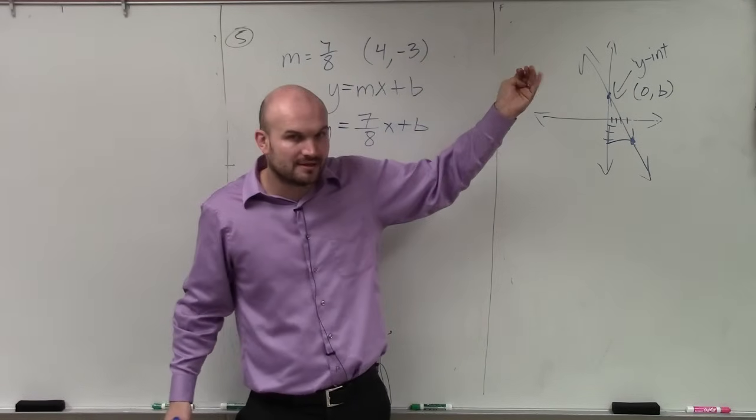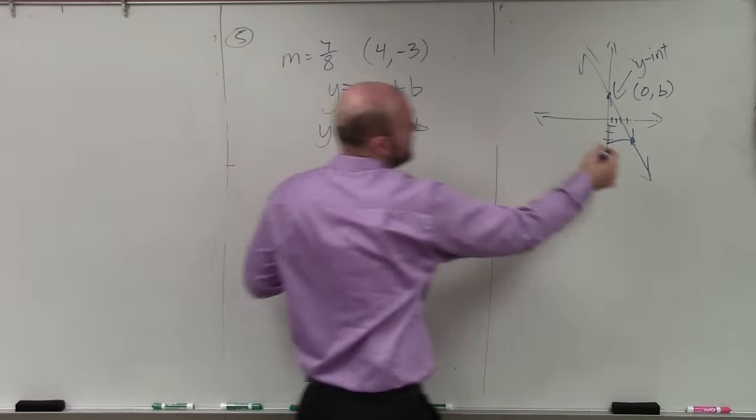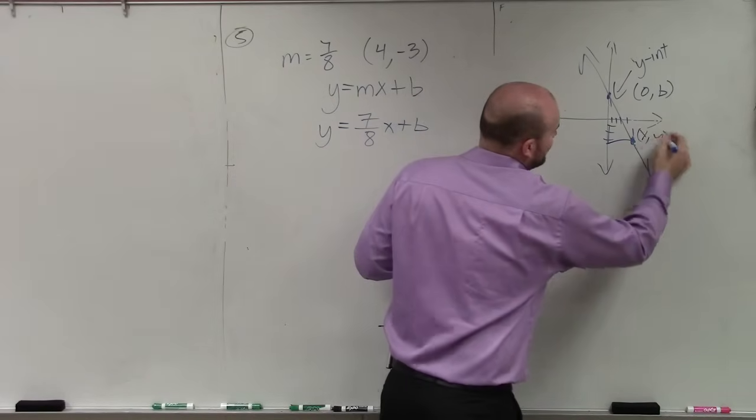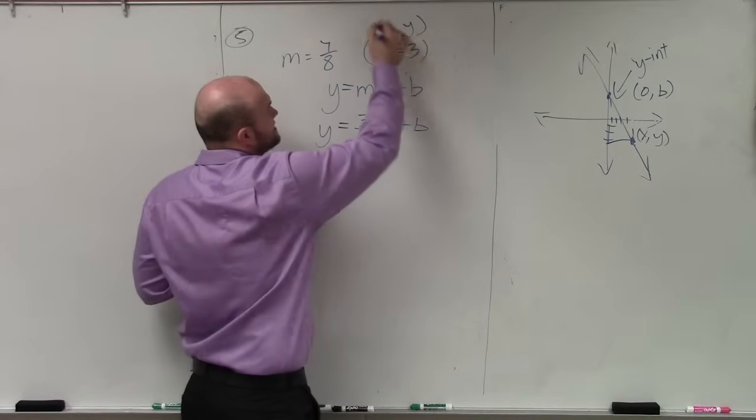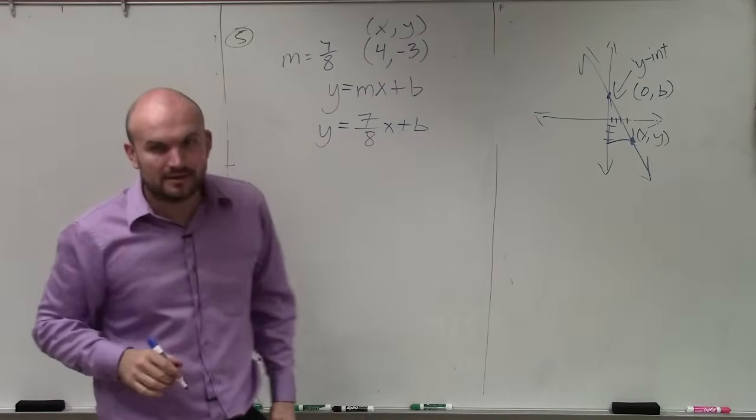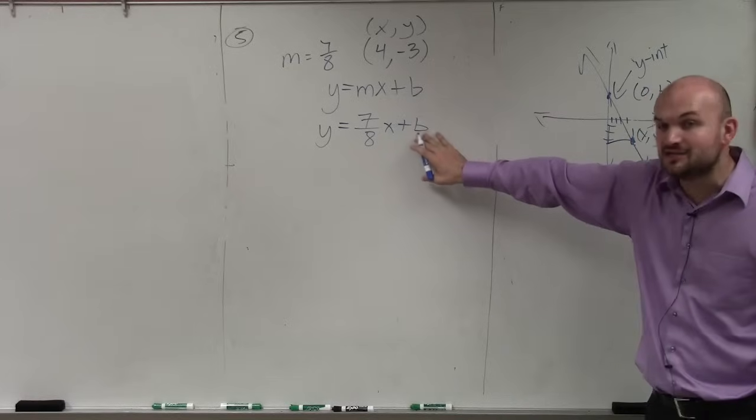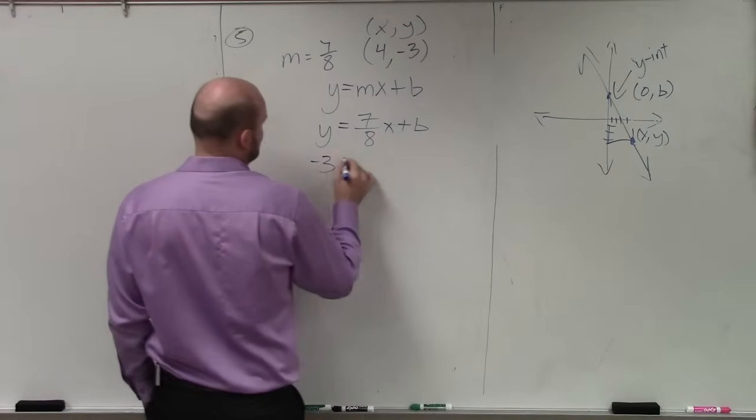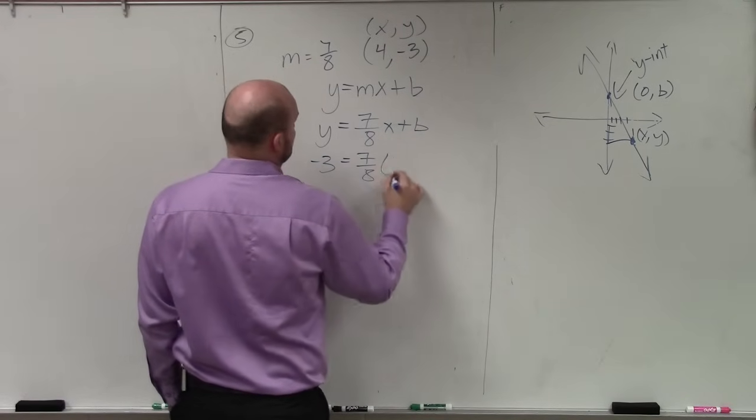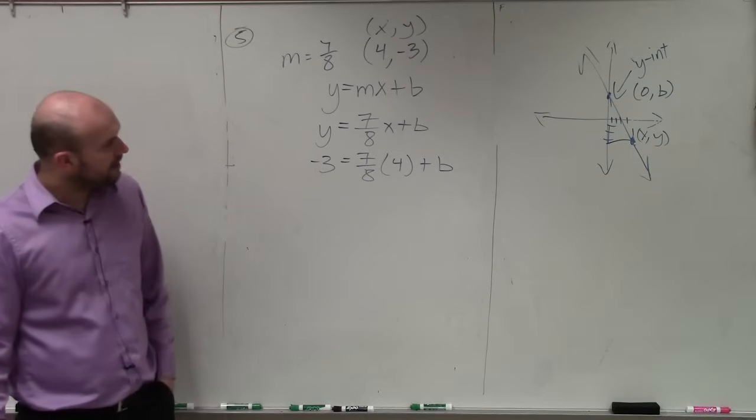This is just a point on the line. And if it's a point on the line, that means it has x and y coordinates. So therefore, this point you can represent as an x comma y. Now to go ahead and solve for that, to go ahead and identify, to find your b, what we're simply going to do is plug in our x and y coordinates.